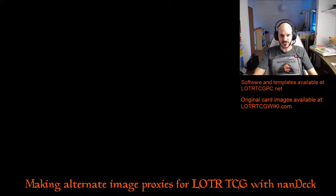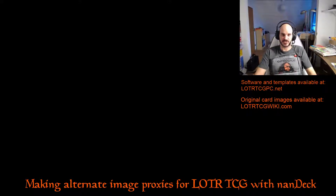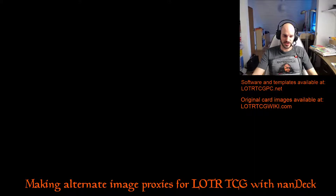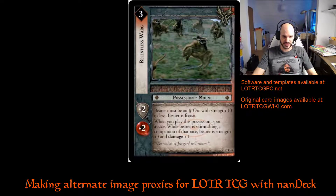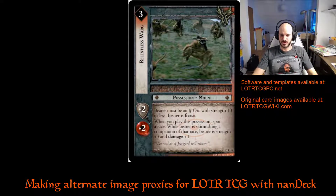Most of the hard work has already been done by people far more clever than me, and we are going to use their hard work to help us make our proxy cards look good. At the moment I'm trying to build a shadow side centered around warg riders, but I just don't have four Relentless Wargs. That's this beauty from the Rise of Saruman set — if you can find one online it usually goes for ridiculous prices.